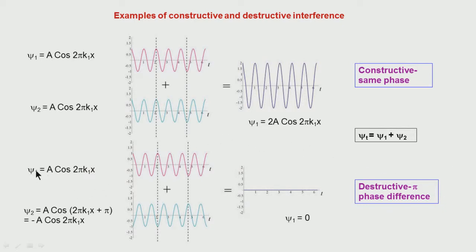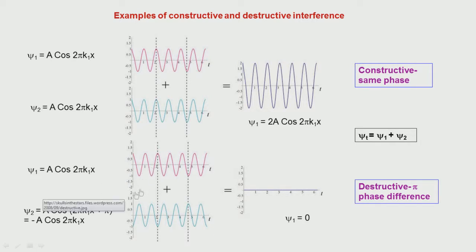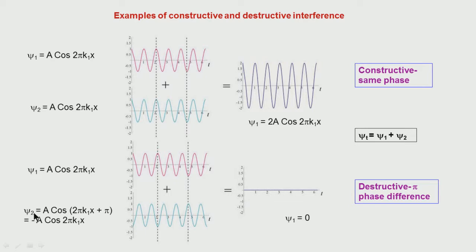Now considering another case where the first wave is the same but the second wave has a phase shift of +π introduced. When this phase shift is introduced, ψ₂ becomes −A cos(2πk₁x). When these two waves are added together the net amplitude turns out to be zero — complete destructive interference has taken place. That wave has just vanished; there are no fluctuations. This is what we call destructive interference.